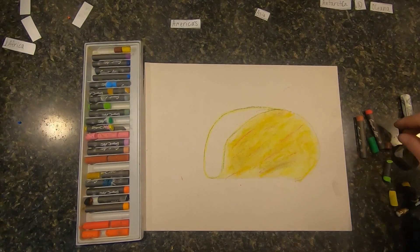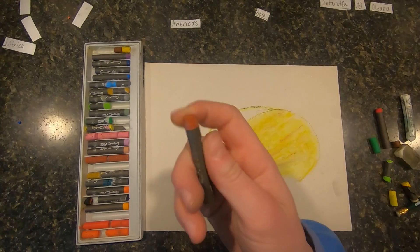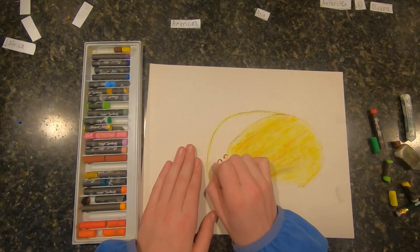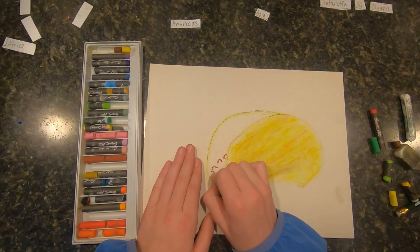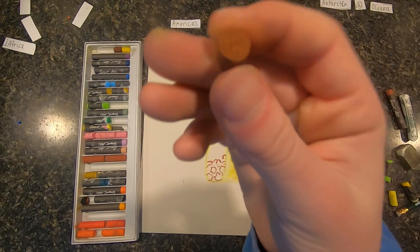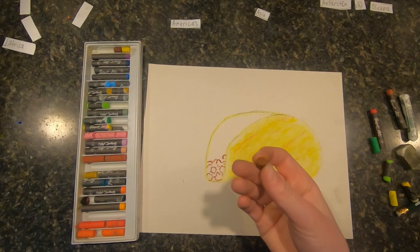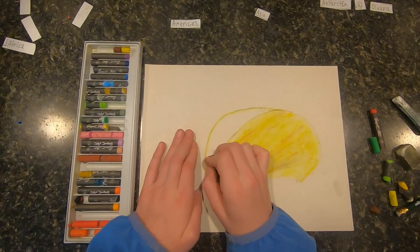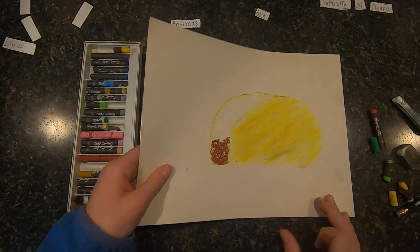Now I'm going to take my lighter brown and go down here and kind of start making the meat. With my darker brown, I'm going to kind of do the outline. And then I'm going to take my really dark brown and go in through here. Okay, so that's my meat down there.